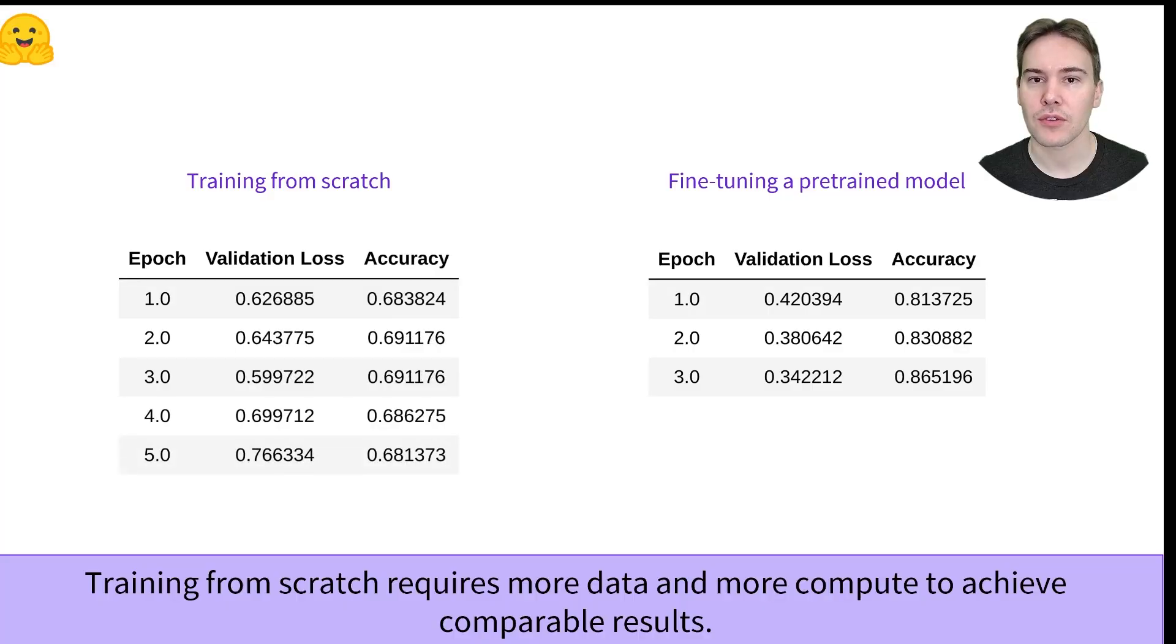And it doesn't matter if you train longer. The training from scratch is capped around 70% accuracy, whereas the pre-trained model beats 86% easily.